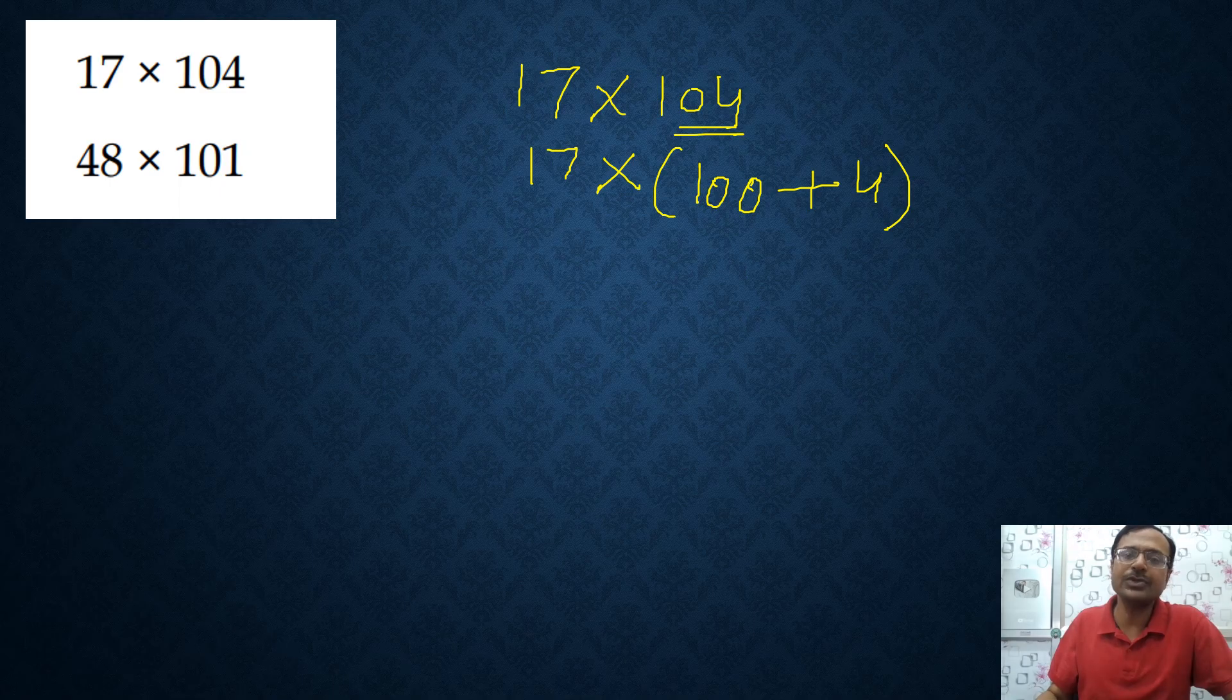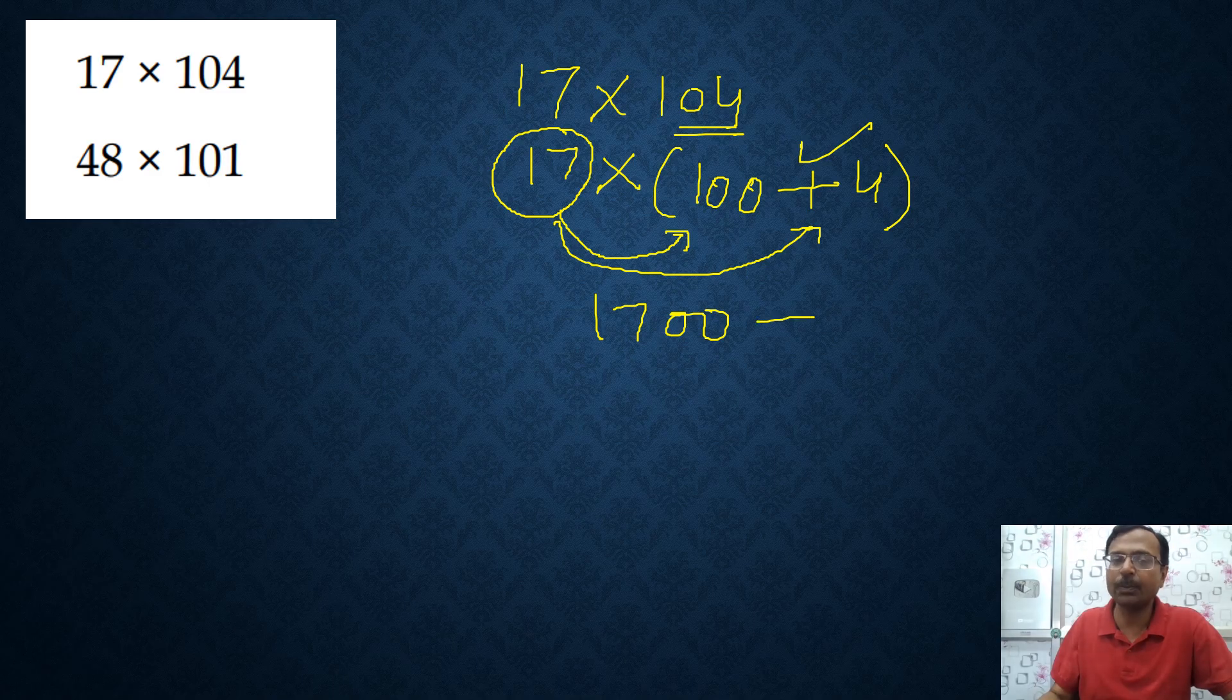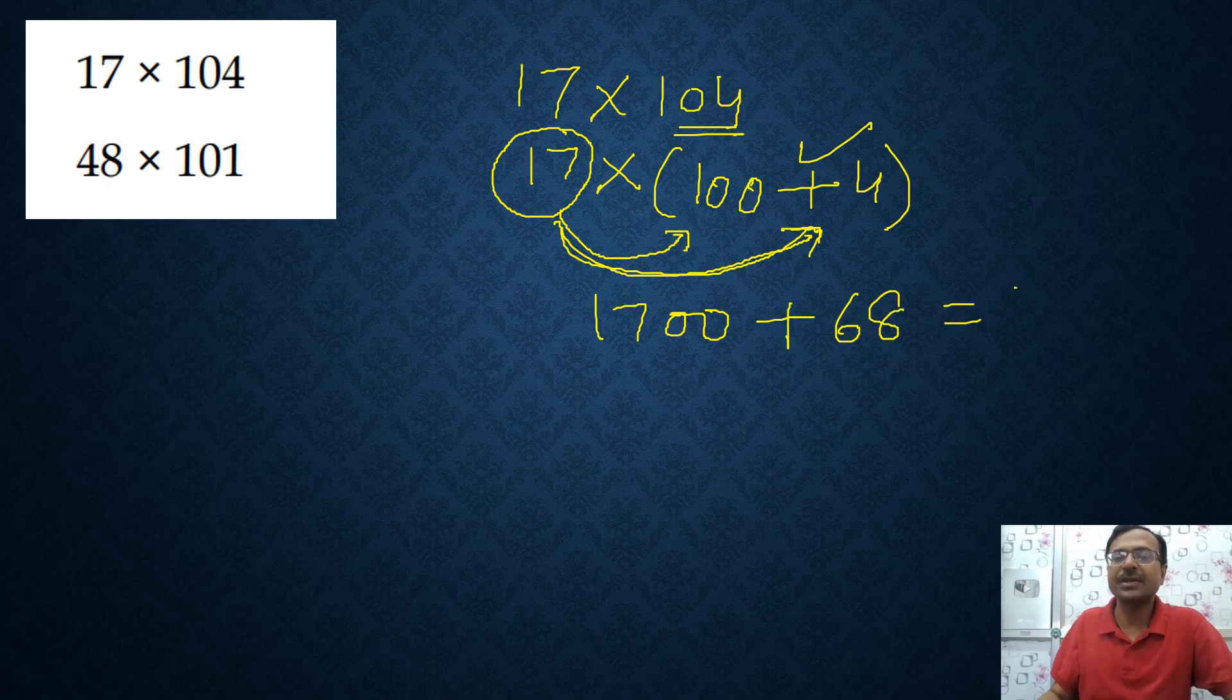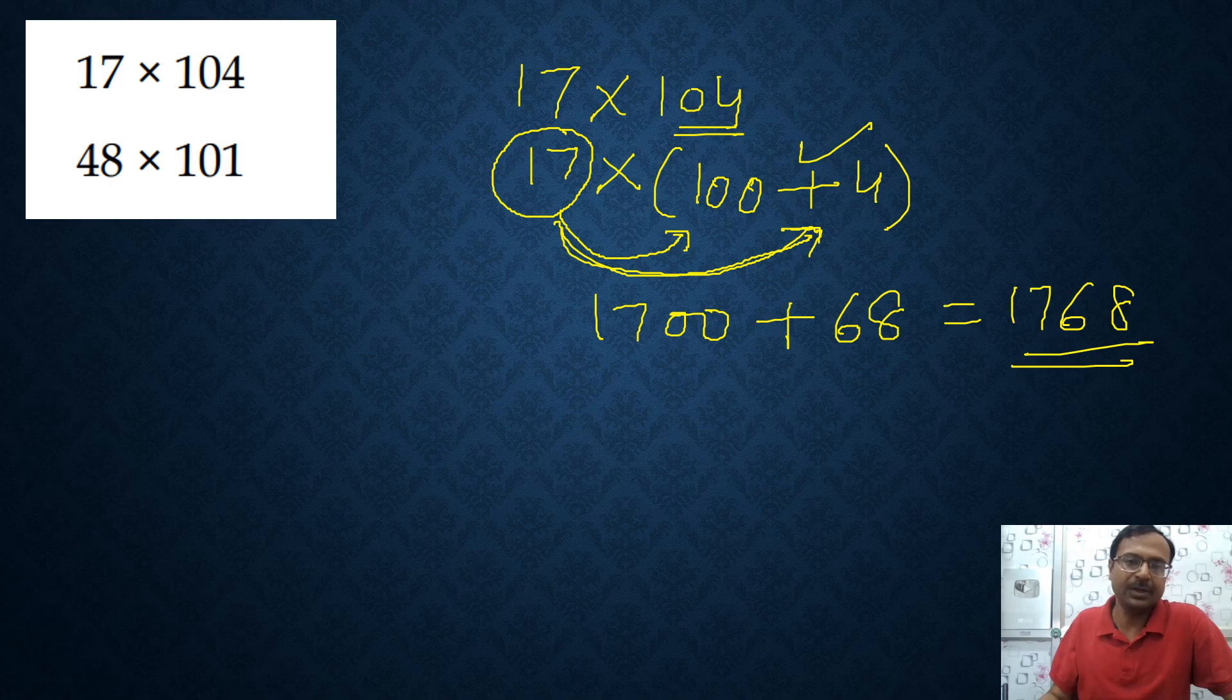I am going to use the distributive property now. The number outside the bracket is going to be distributed inside the bracket. So 17 times 100 is 1700 and we have the plus sign here, plus 17 times 4. If you know the 17 times table it is 68. So your answer is 1768. You don't have to remember huge tables and you don't have to carry out the traditional multiplication.